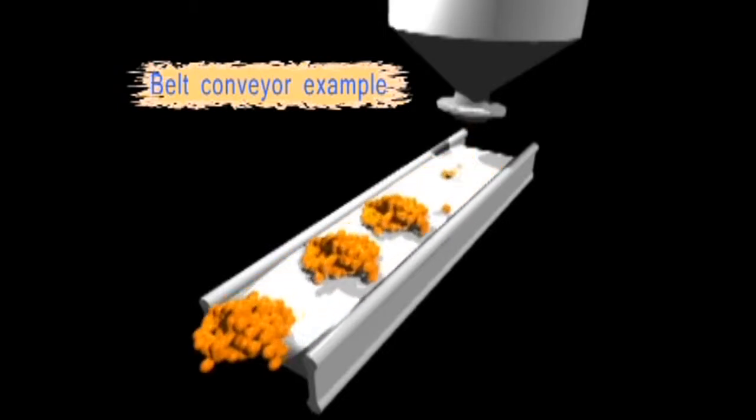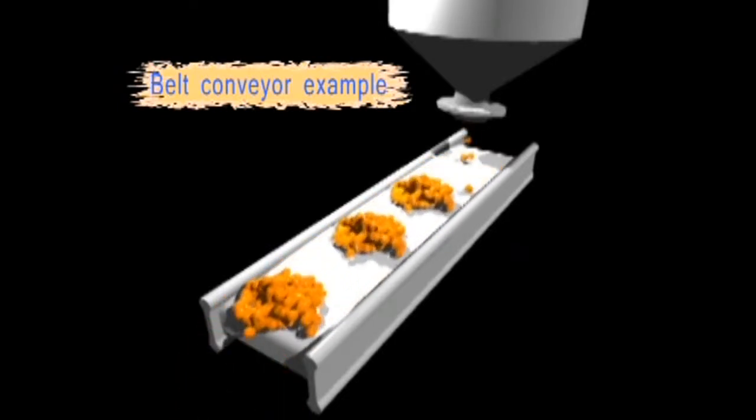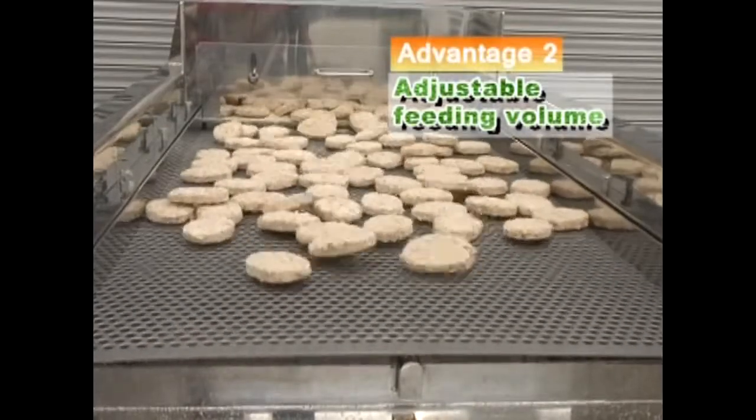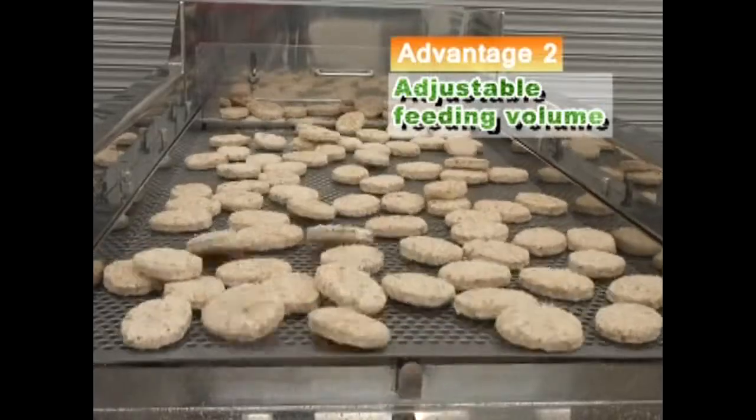While conveyor belts simply transport objects in their original shape, the vibration feeder allows adjustment of the feeding volume, reducing jams.